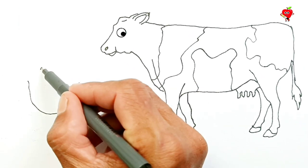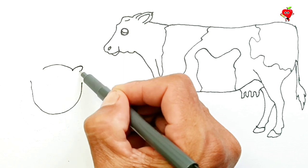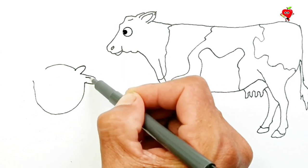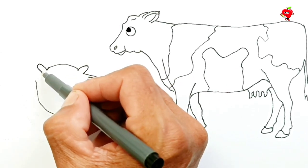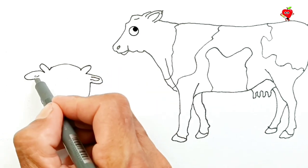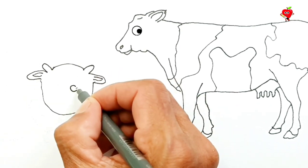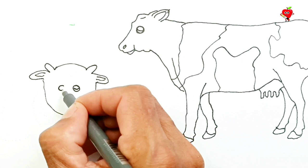We have already drawn one cow! It turns out there are two cows here, namely a cute calf! He was sitting with his mother! Wow! That's great!